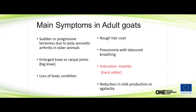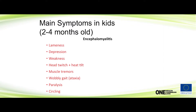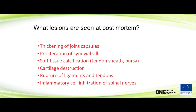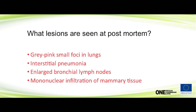Hard udder is another sign — the virus also goes to the udder, and obviously you'll have a reduction in milk production as a result. In kids it's a bit different. Usually in kids two to five months old, you will see encephalomyelitis. At post-mortem you won't see anything obvious, but if you do histology, you might see proliferation of cyanophilic villi, soft calcification, rupture of ligaments, inflammatory cells in spinal nerve, foci in the lung, and interstitial pneumonia.